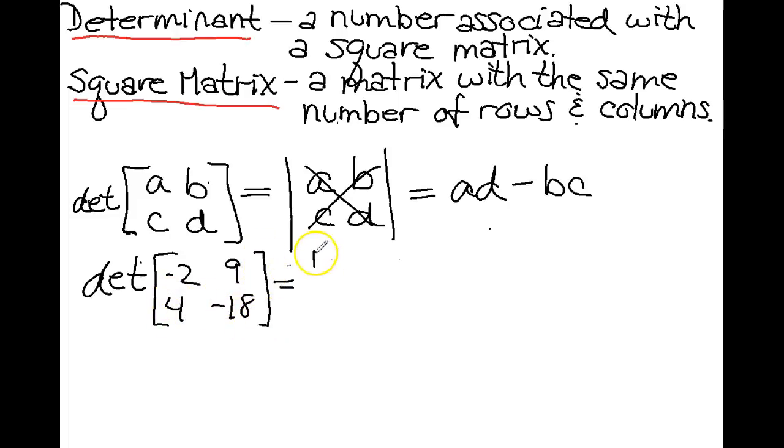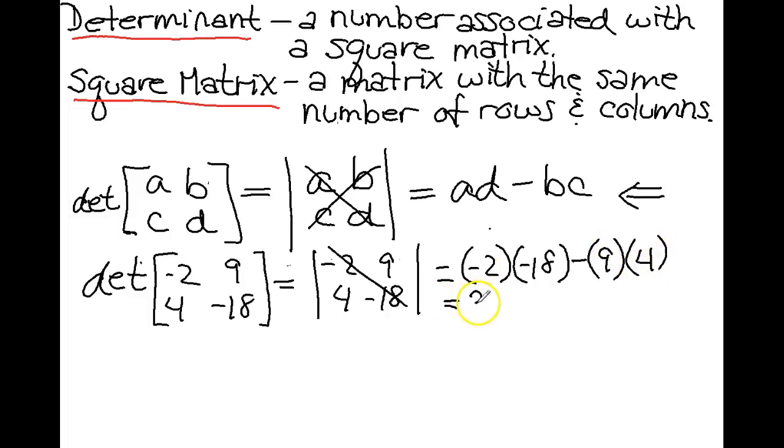That is also written as negative 2, 9, 4, and negative 18 in between straight lines. It means the same thing. So let's find the determinant using this formula. So negative 2 times negative 18 minus 9 times 4, which is 36, minus 36, which is 0. The determinant of this matrix is 0.